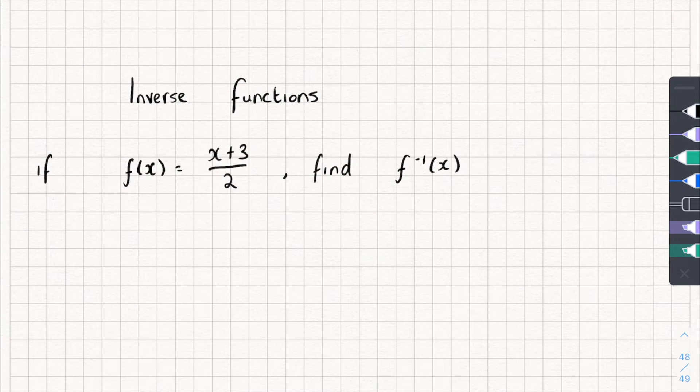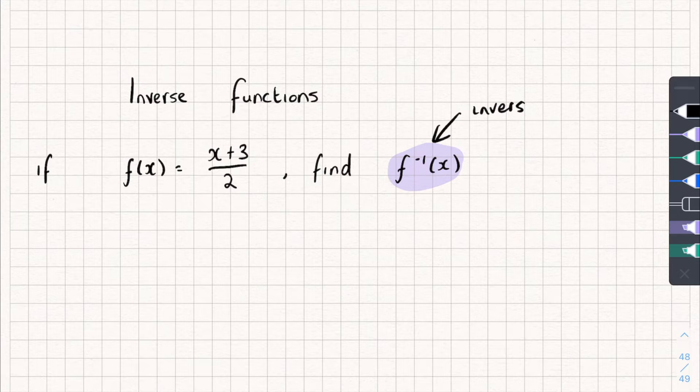Inverse functions is the final thing I'm going to talk about. So if we've got a function here, so if f of x equals x plus 3, all divided by 2, find f to the minus 1 of x. And this minus 1 just means we're finding the inverse. That's how we write the inverse of a function. And I'll find the inverse. I'll teach you how to do that. And then I'll talk about what the inverse actually does.